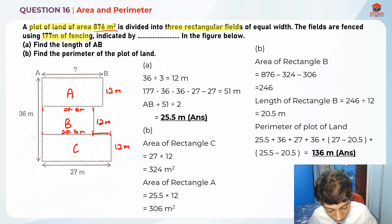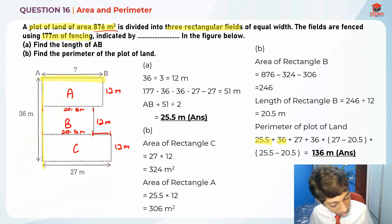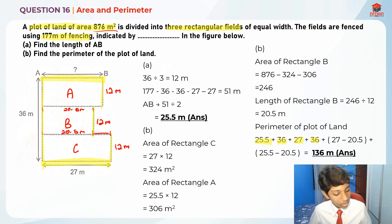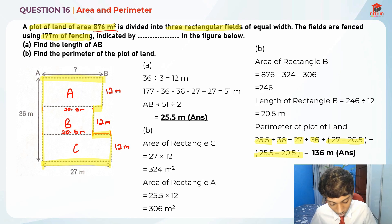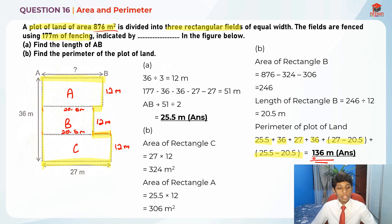So 25.5 is this length, 36 is this length, 27 is this length, 36 is the three widths of 12 + 12 + 12, (27 − 20.5) is this step length, and (25.5 − 20.5) is this step length — giving us the perimeter of 136 meters. That is the answer for Part B. I hope you understood my explanation for Question 16 on area and perimeter. Thank you and bye-bye, see you in the next video!